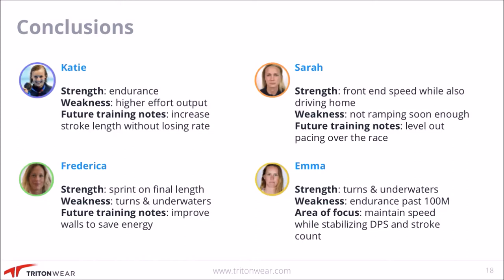With Federica, her strength was that final sprint — extremely powerful, almost overcoming McKeon. Her weakness was her turns and underwaters, which if improved could have made the difference between having a medal and not. Improving those walls would have saved energy and required fewer strokes from her arms. Emma had very strong turns and underwaters, consistently holding good underwaters. Her weakness was endurance past 100 meters, having gone out extremely aggressively. The focus area for Emma would be maintaining her speed while stabilizing distance per stroke and stroke count over the course of the entire event.